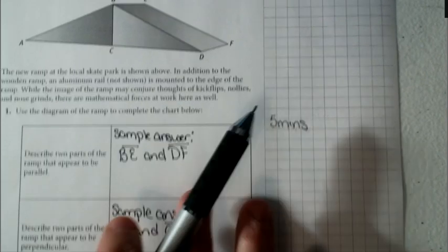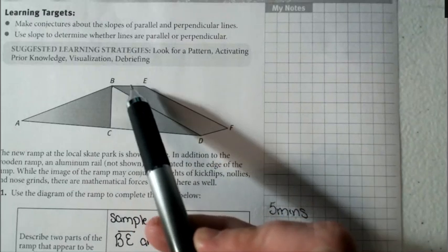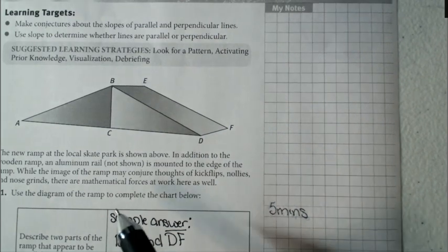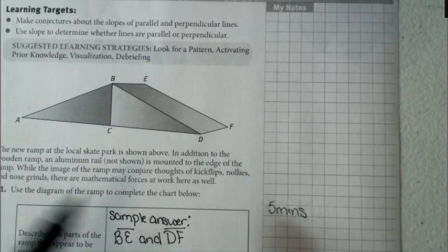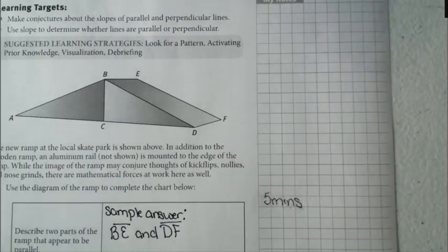I listed BE and DF. I said that this line segment going across the top here looks to be parallel to DF. Was that the only set? No, you probably could have come up with BD and EF as well.